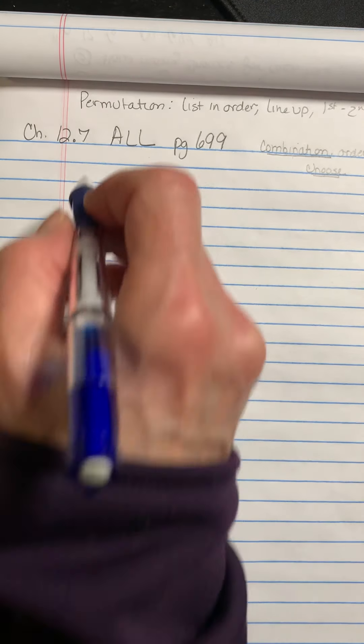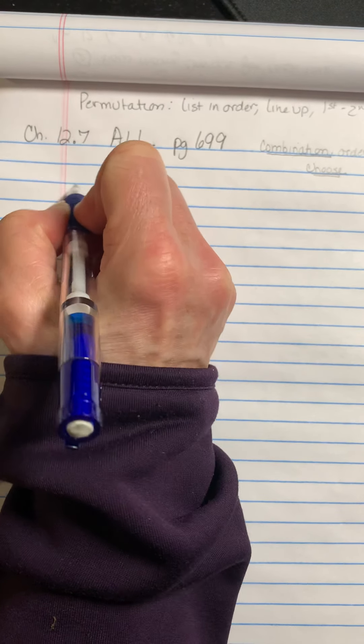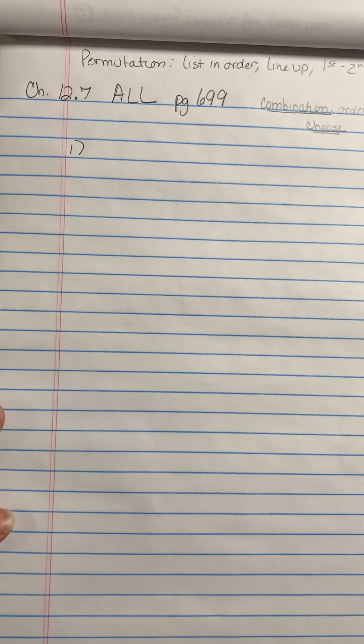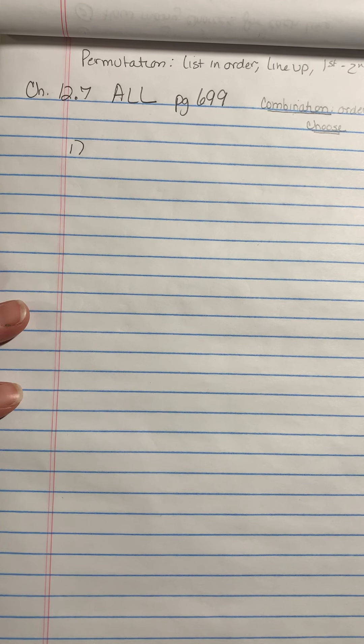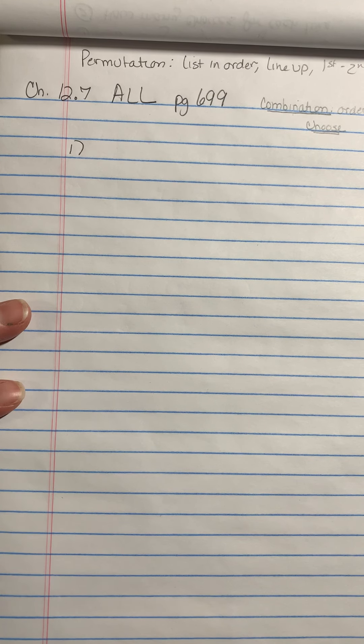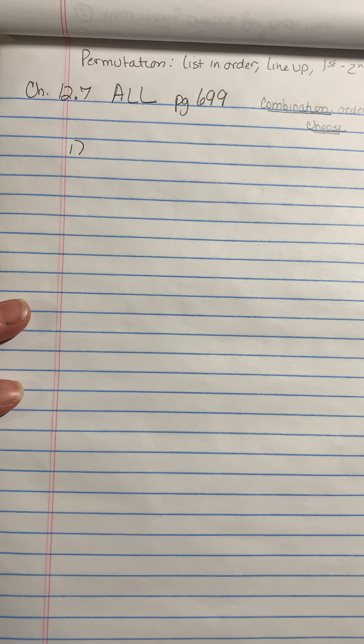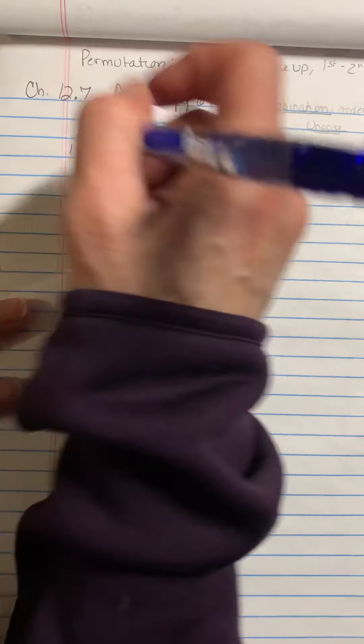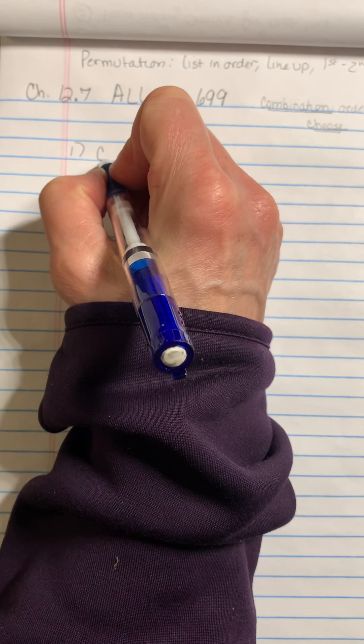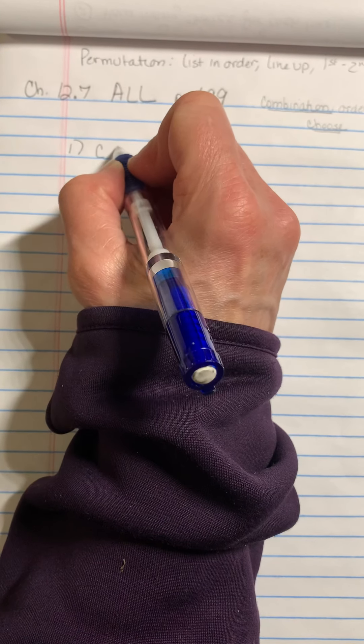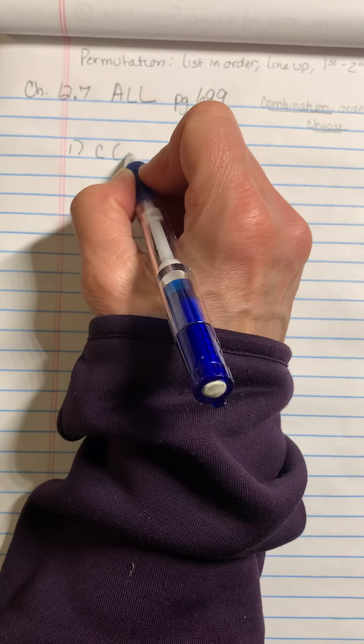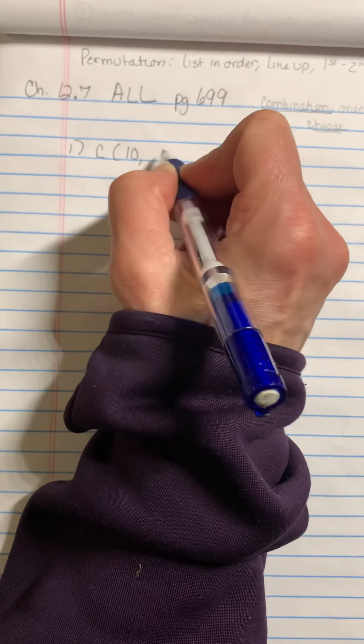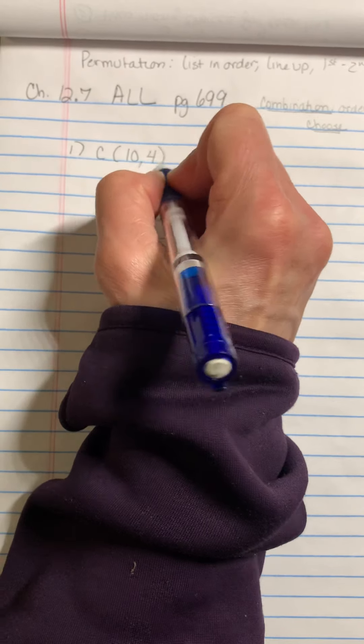So let's start with question number one. Question number one reads, how many ways can you make a sandwich by choosing four of 10 ingredients? I'm not lining the sandwich up. It doesn't matter how I put the meat on it. So I'm just choosing it. And because I'm choosing it, it becomes a combination. And the combination becomes, remember, how many ingredients do I have? And how many can I put on the sandwich?